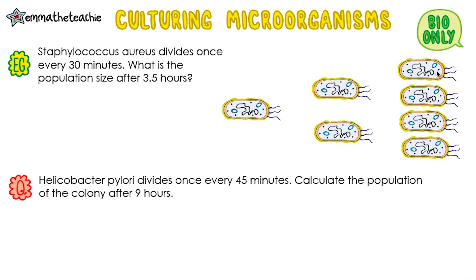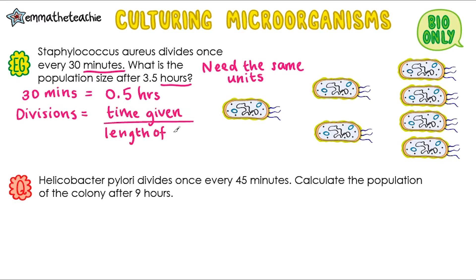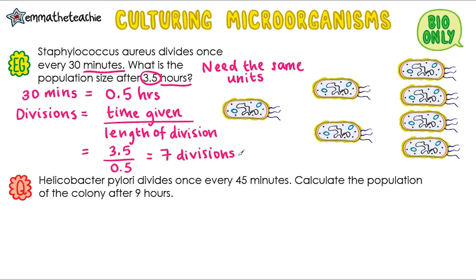Staphylococcus aureus divides once every 30 minutes. What is the population size after 3.5 hours? The first step is to check that our units are the same. At the moment we've got minutes and hours, and they need to be the same. So let's turn 30 minutes into hours, which is 0.5 hours — you get this by doing 30 divided by 60, or just think of it as half an hour. Next, we'll work out how many times it has divided. To get the divisions, we divide the time given — in this case 3.5 hours — by the length of one division, which is 0.5. And 3.5 divided by 0.5 gives us seven divisions.